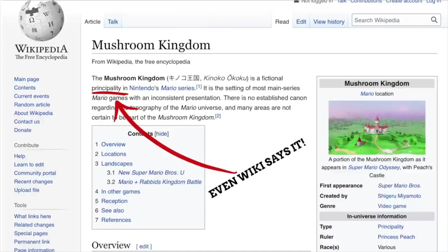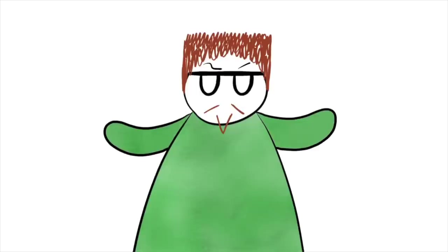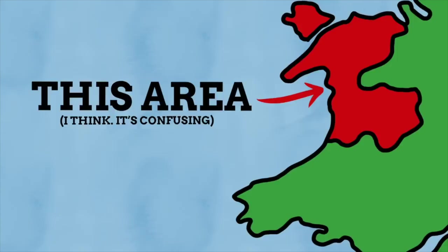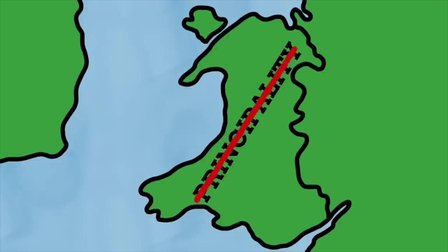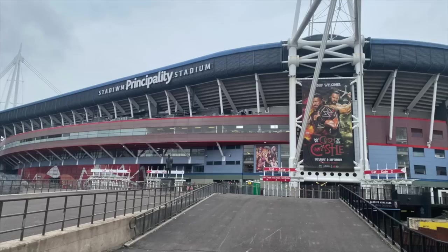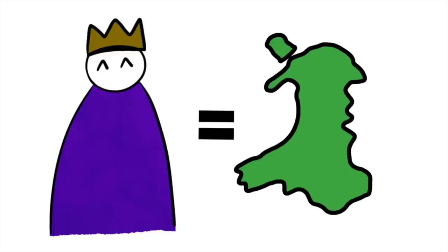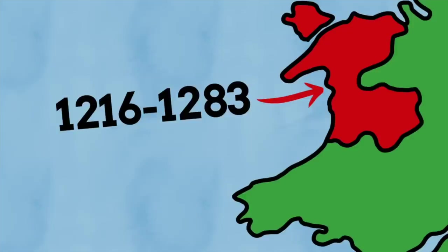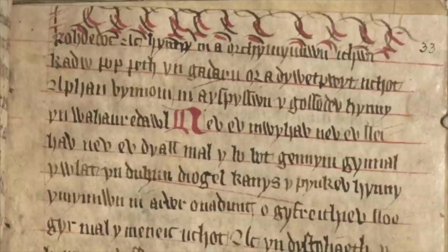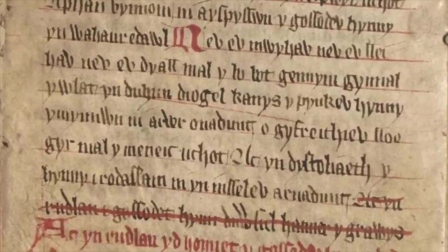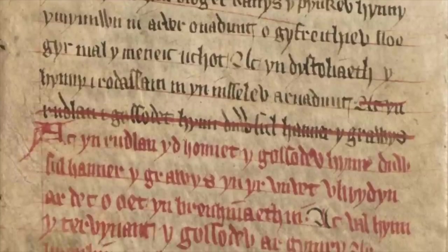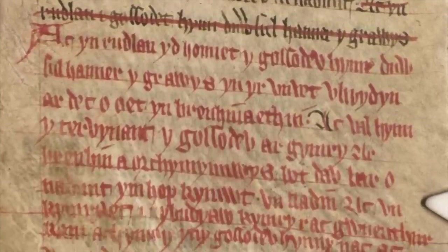A principality is somewhere governed by a prince or princess — there are still a handful on the globe, including Andorra and Liechtenstein. Wales was once a principality — well, an area of modern Wales was dubbed the Principality of Wales, with other areas being their own things. This has led to the popular belief that all of Wales was one big principality, which isn't the case. The principality of Wales was under native Welsh rule from 1216 to 1283, when it came under rule of the English crown via the Statute of Rhuddlan, which claimed parts of Wales under English rule.